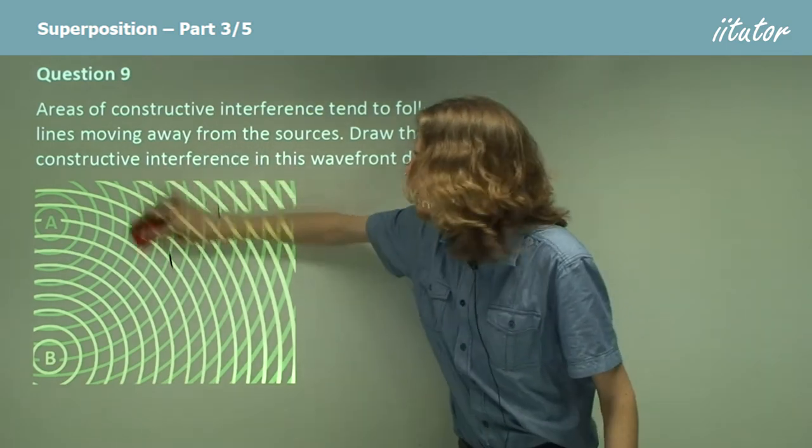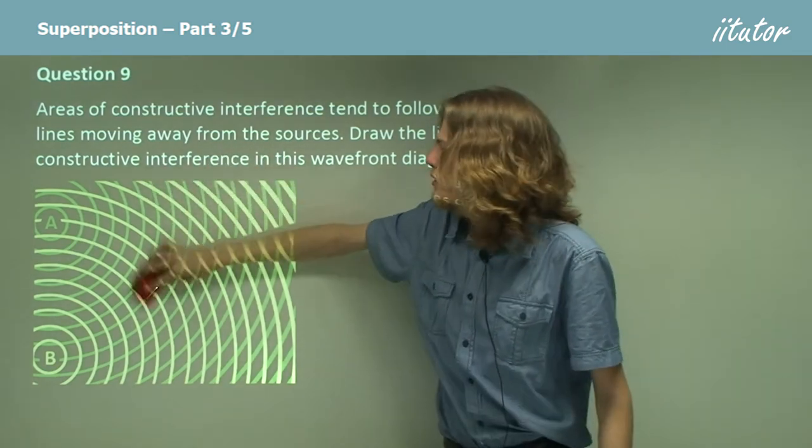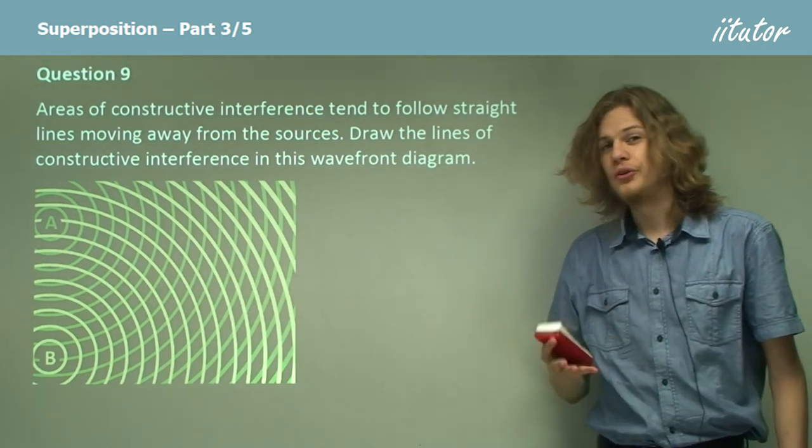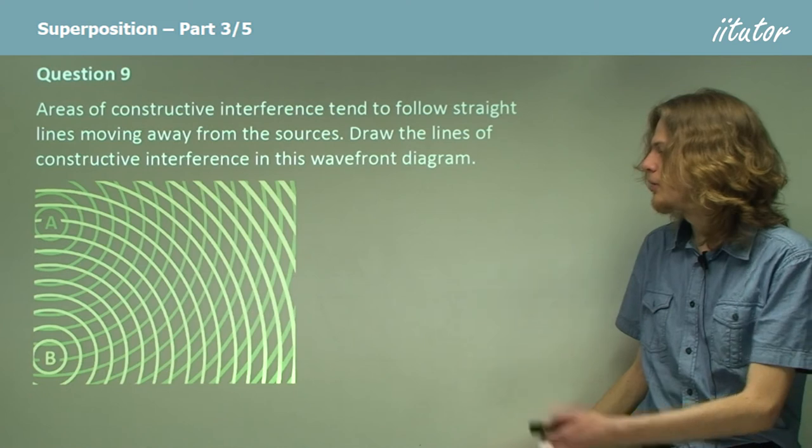And in fact we'll get a straight line that will point to somewhere in between the two sources. So once we draw in a couple our diagram might look a little bit like this.